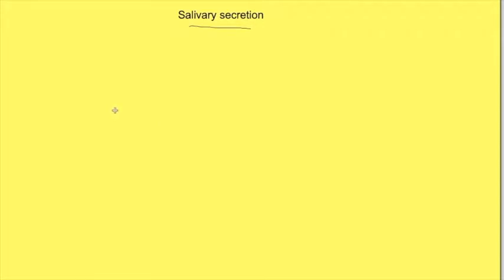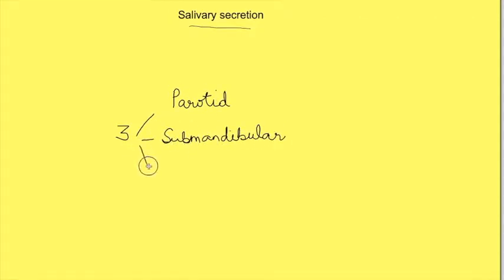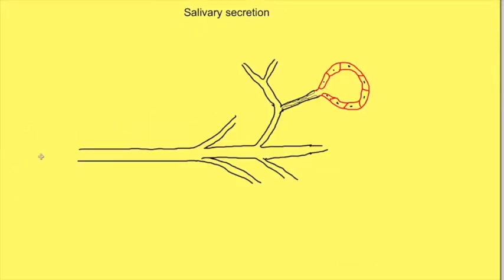Salivary secretion is not essential for life but it is highly important for oral hygiene. There are three main salivary glands: parotid, submandibular, and sublingual. These three are major salivary glands but apart from them there are many minor salivary glands located throughout the oral mucosa. Each salivary gland opens with a duct into the mouth.